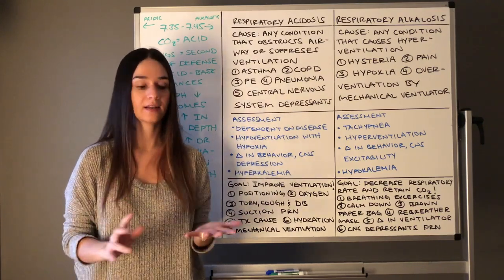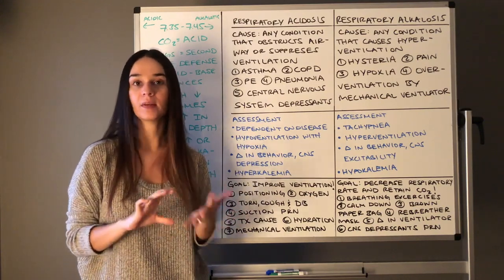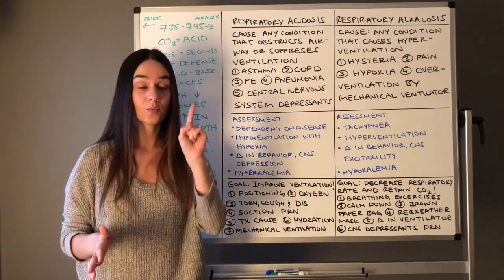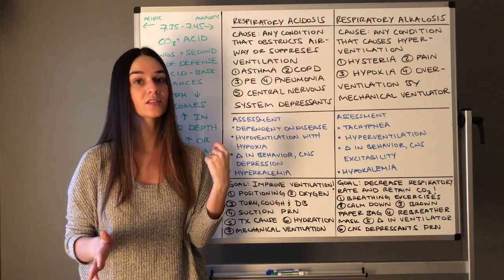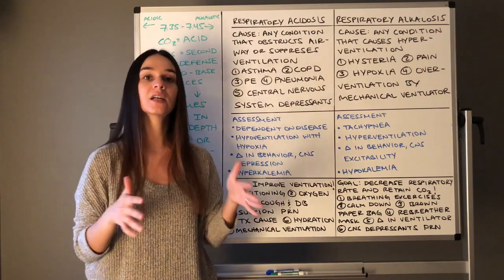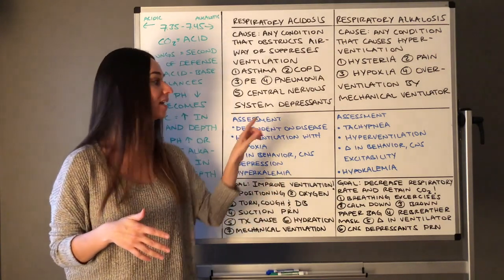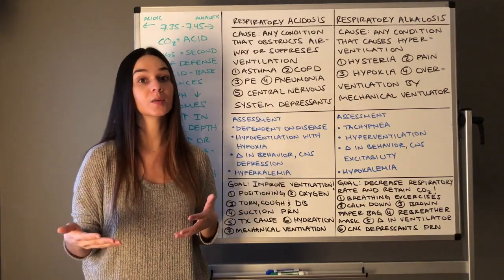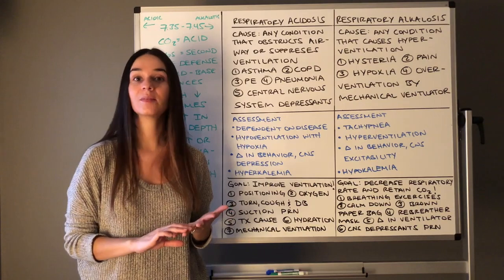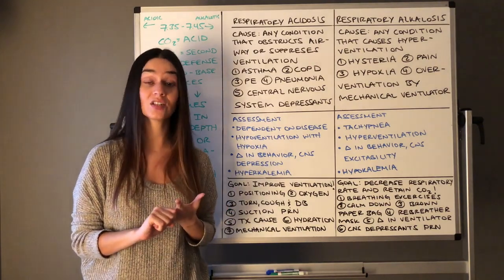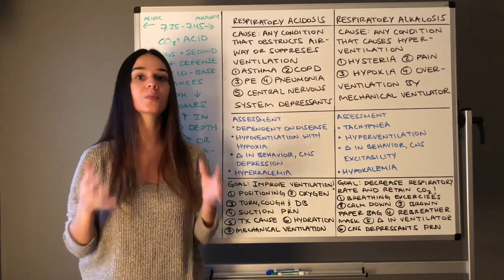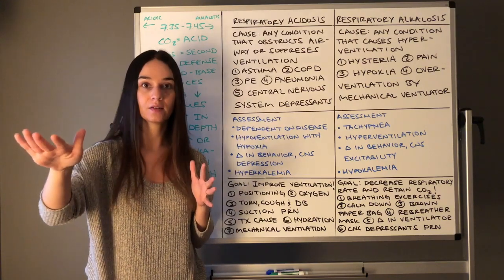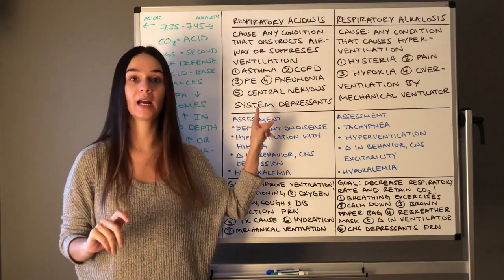COPD, asthma, pneumonia, bronchiectasis — there are many disorders that can obstruct the airway. If O2 is low, give oxygen, but also recognize they can't get CO2 out and could be going into respiratory acidosis. Anything that suppresses breathing — opioids, benzodiazepines, general anesthesia — suppresses the ability to breathe. Any disorder that does not allow you to effectively exhale CO2, which is your acid, can lead to respiratory acidosis.